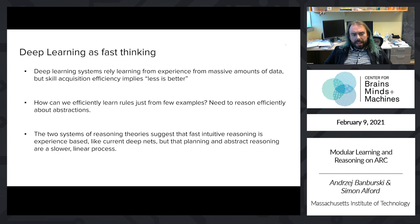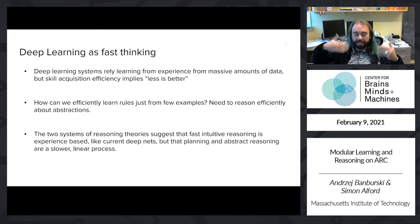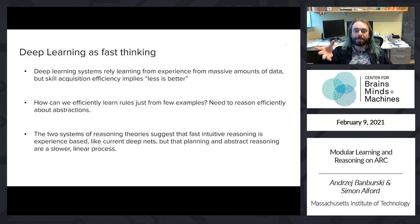Within cognitive science there are dual reasoning system theories: fast intuitive reasoning based on experience that allows you to respond quickly — I would claim deep nets are exactly this kind of system, essentially fancy lookup tables capable of extrapolating within experience — and then a slower system responsible for our language, logic, mathematics, and general reasoning abilities, which is a more linear and step-by-step process. Deep learning doesn't do this, and the question is how do we get to something capable of this slower, more abstract reasoning.